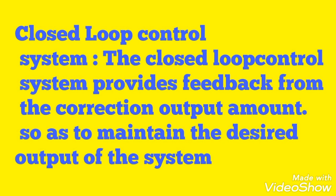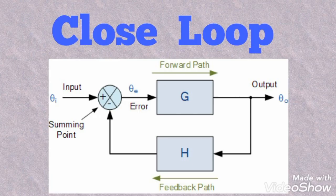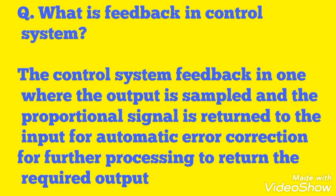The second type is the closed loop control system. The closed loop control system provides feedback from the output so as to maintain the desired output. In a closed loop system, some amount of output is used as feedback to the controller, so the input is changed according to the output changes.